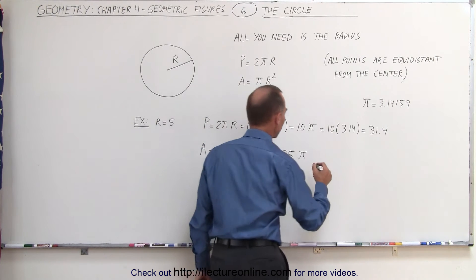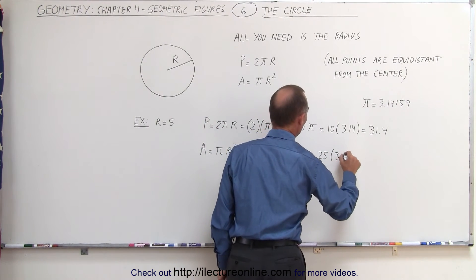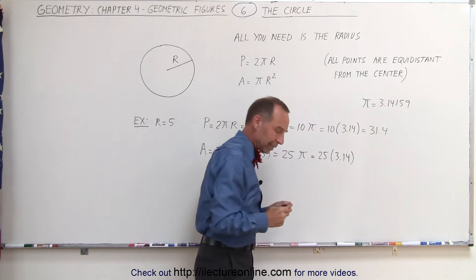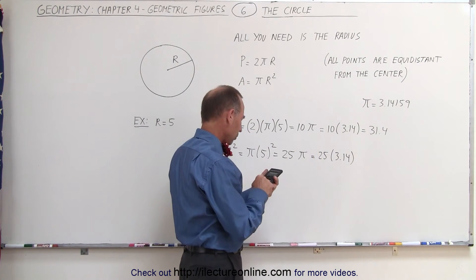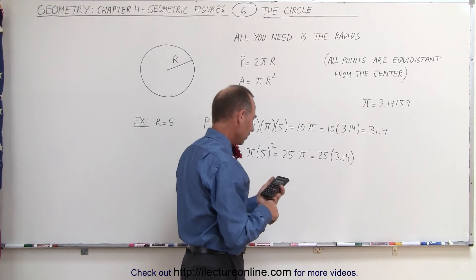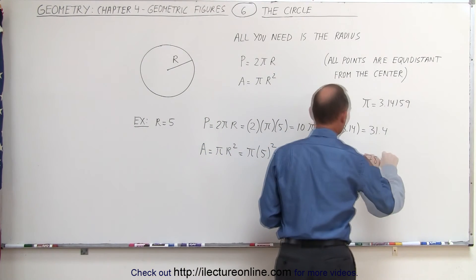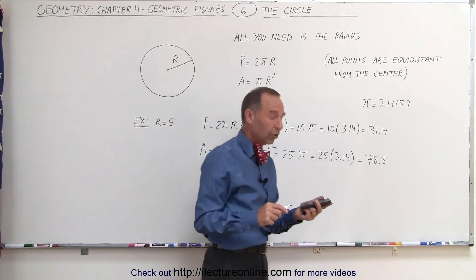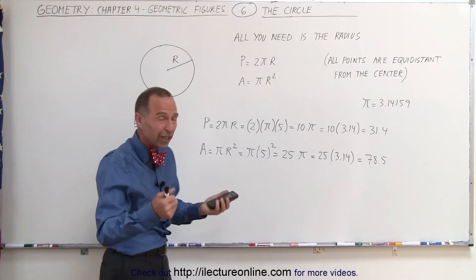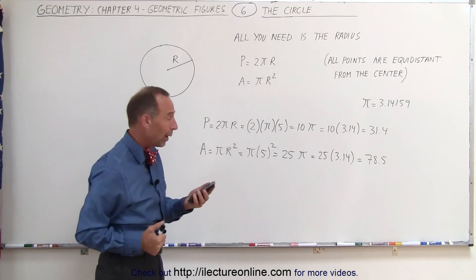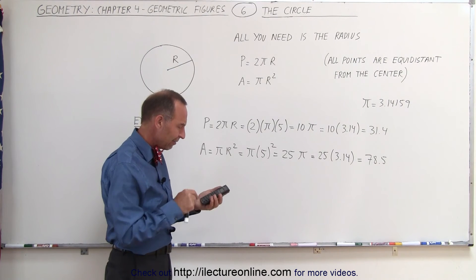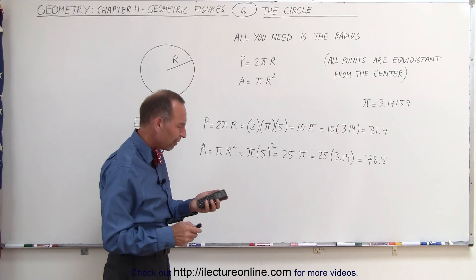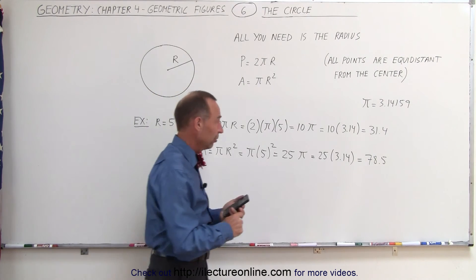Again, if we use the approximation that π is about 3.14, then by the calculator we can find that's equal to 3.14 times 25, which is 78.5. Or what you could do is you could simply use π, because most calculators have π embedded right in them. So if I use that, I simply go π times 25, I get 78.54.